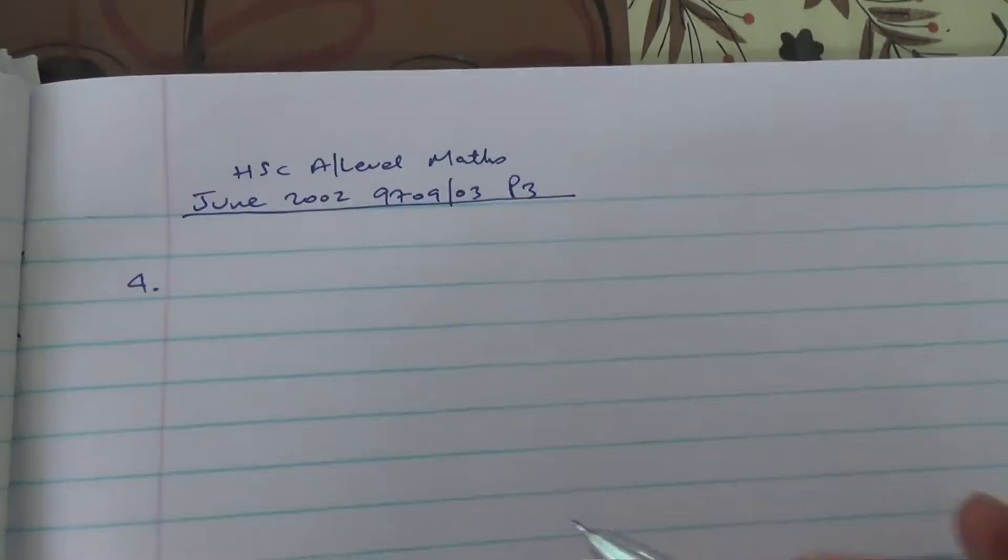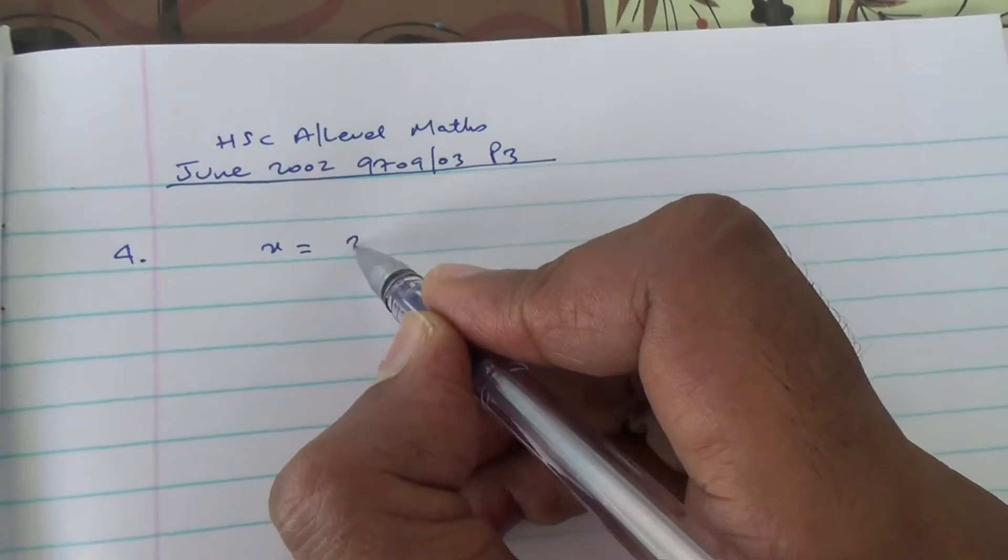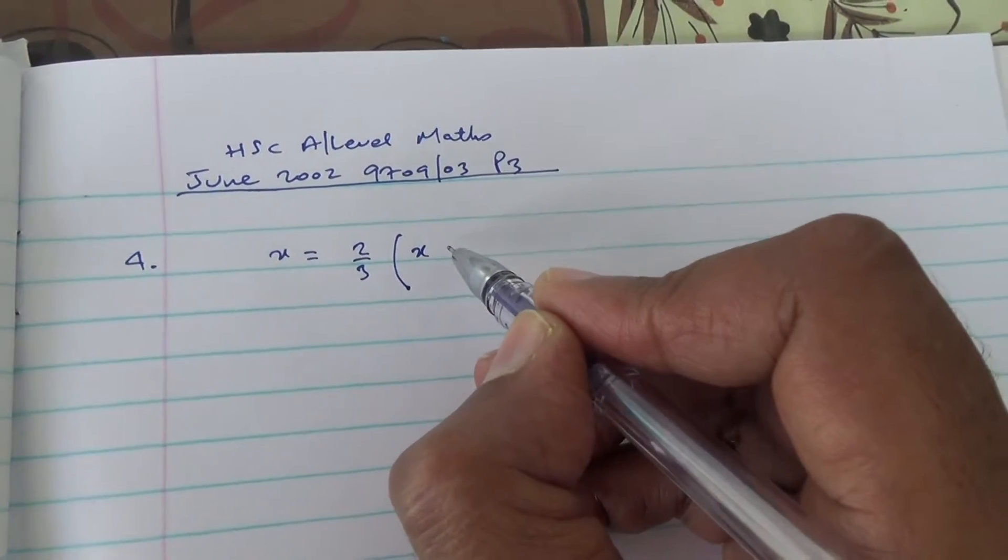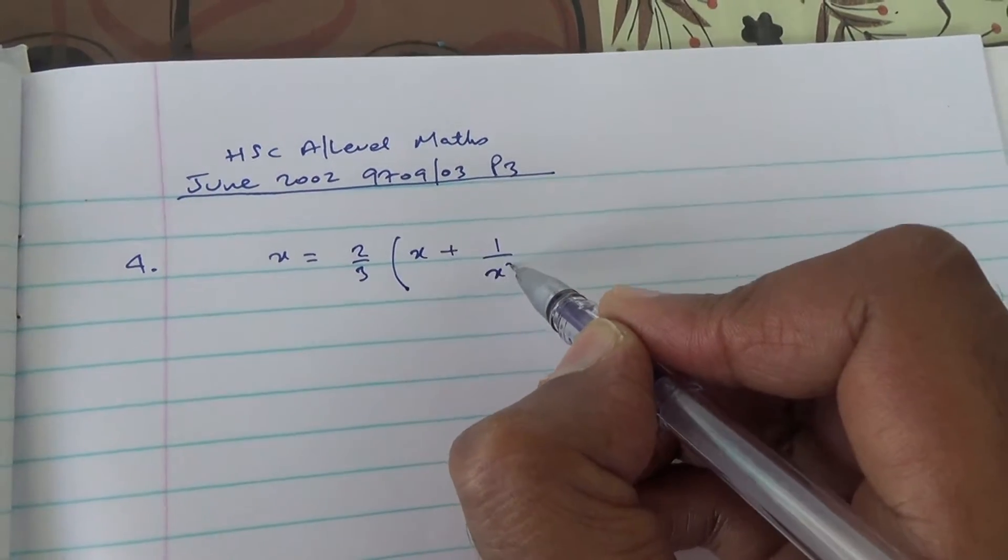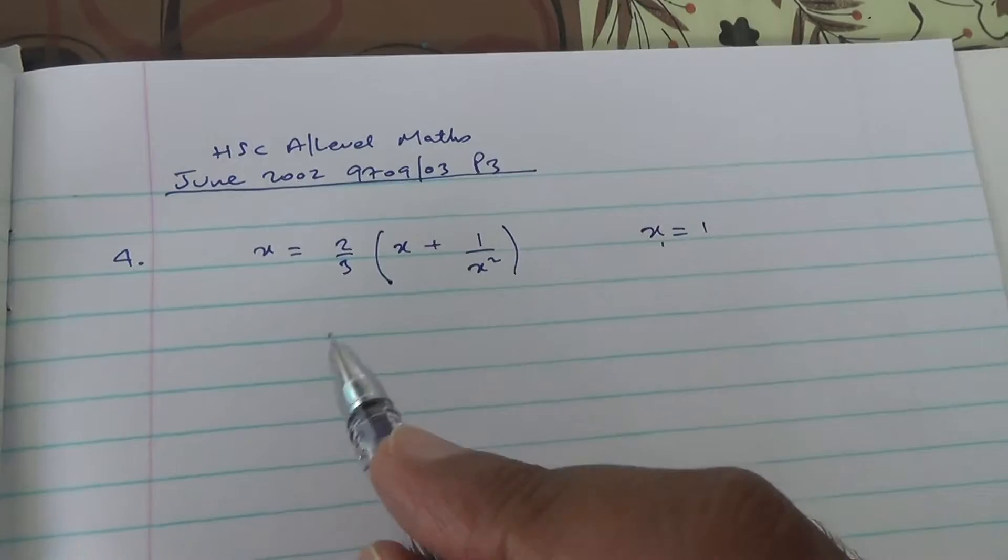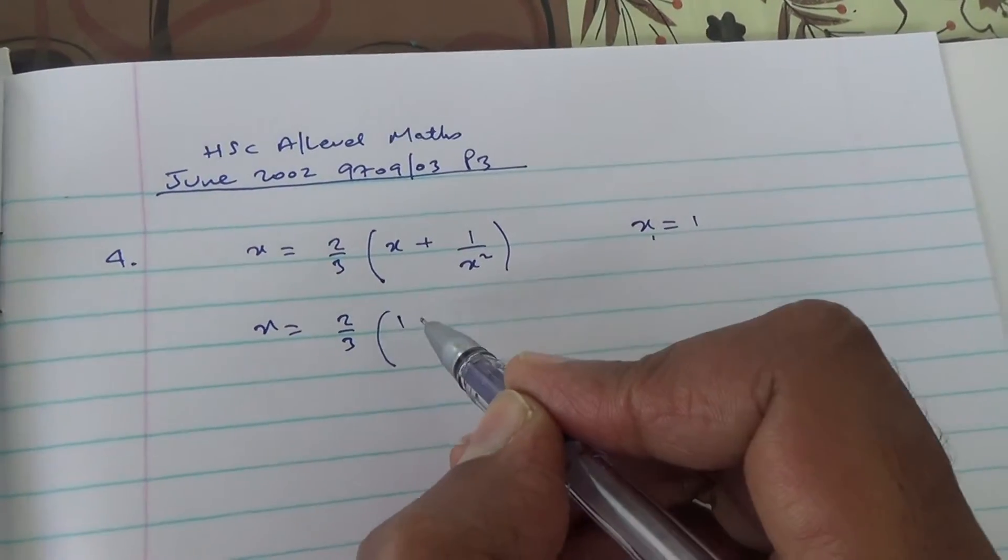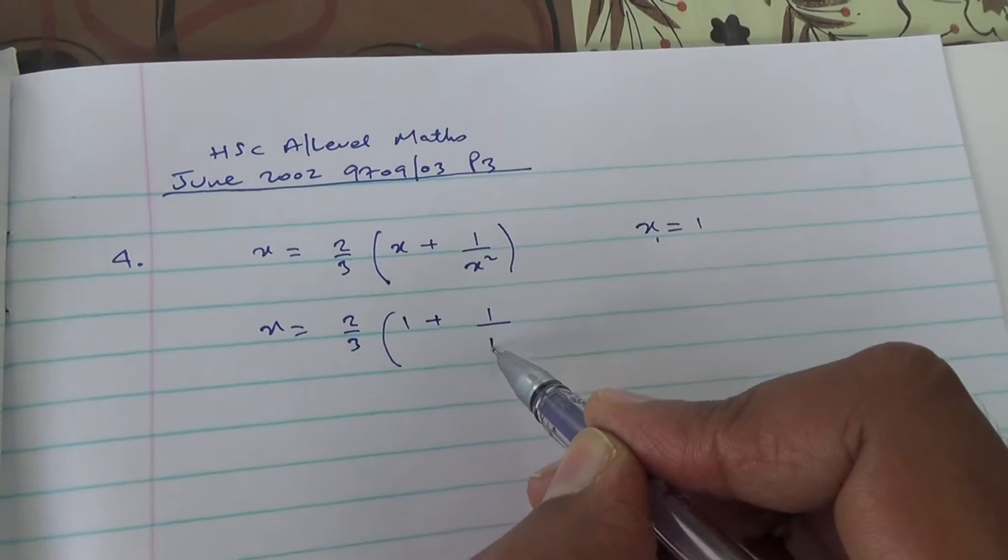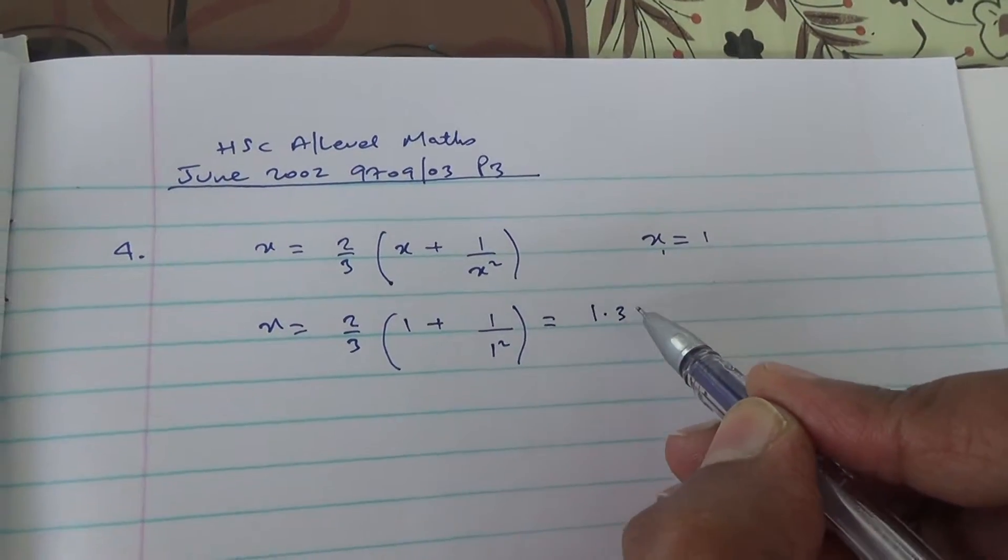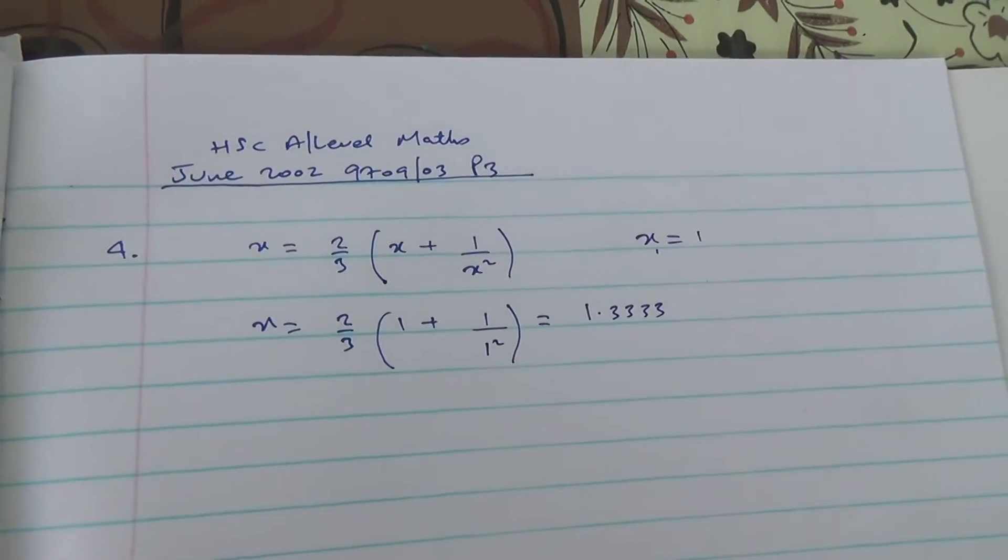For the first part of the question, we have x is equal to 2 thirds times x plus 1 over x squared. The initial value of x is equal to 1. So we have x is equal to 2 third into 1 plus 1 over 1 squared. To work that out in your calculator, you'll reach 1 decimal 3, 3, 3. It goes on forever, but I'm going to take it to 4 decimal places.